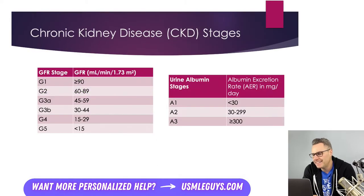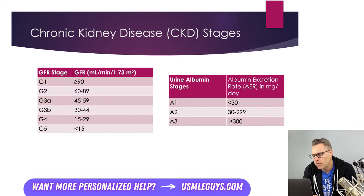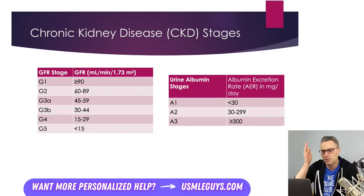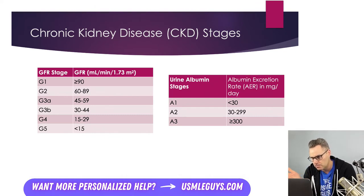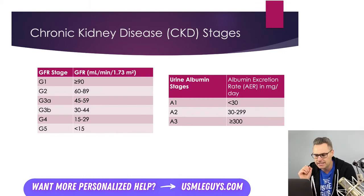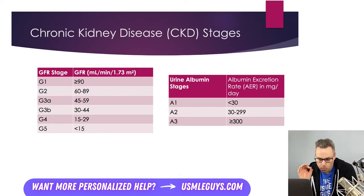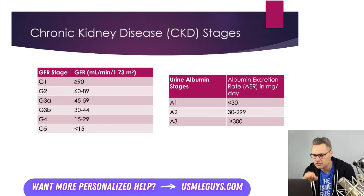When it comes to CKD stages, let's start with GFR and the G stage. Although the stages are G1 through G5, we actually have six stages because G3 is separated into G3A and G3B depending on the patient's GFR. This division was put into place following studies indicating a strong risk for mortality and adverse kidney outcomes when GFR was lower, with those in the 30 to 44 range faring worse than those in the 45 to 59 range.